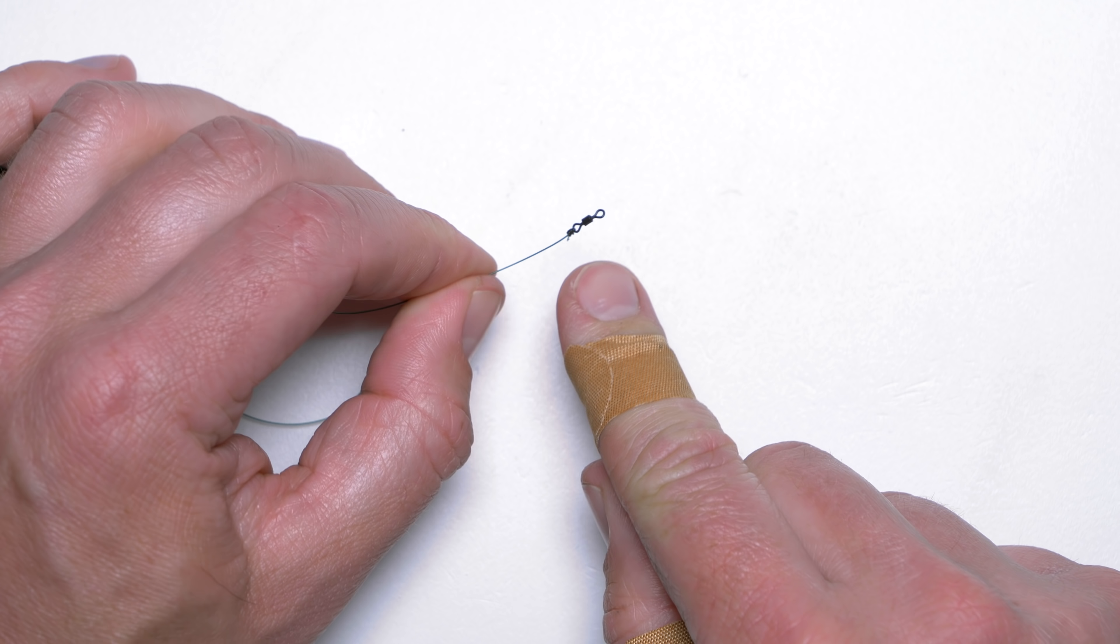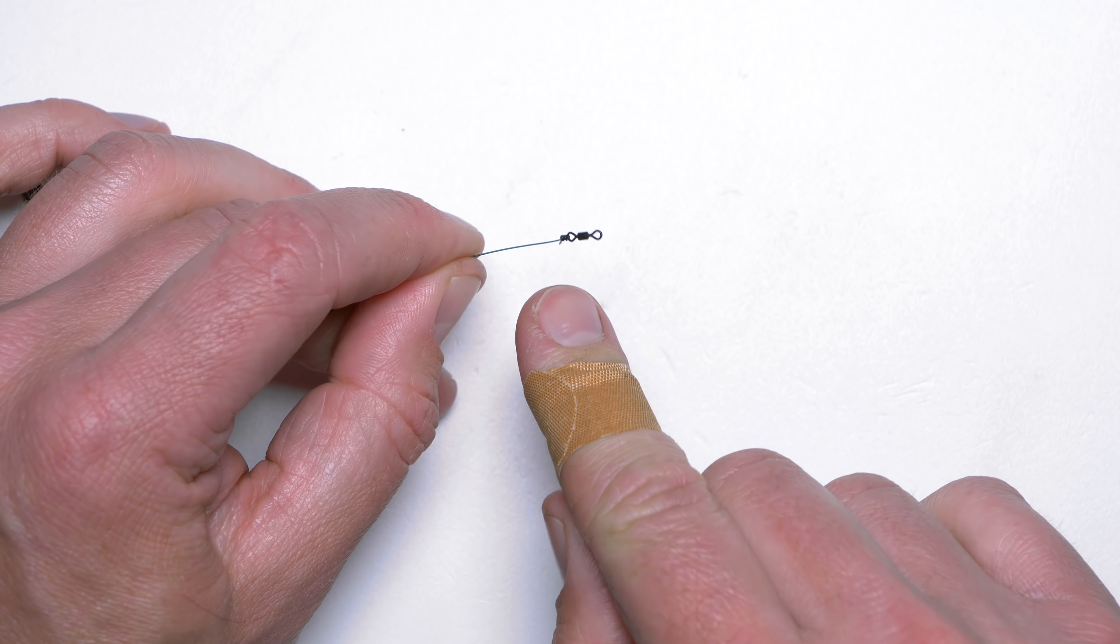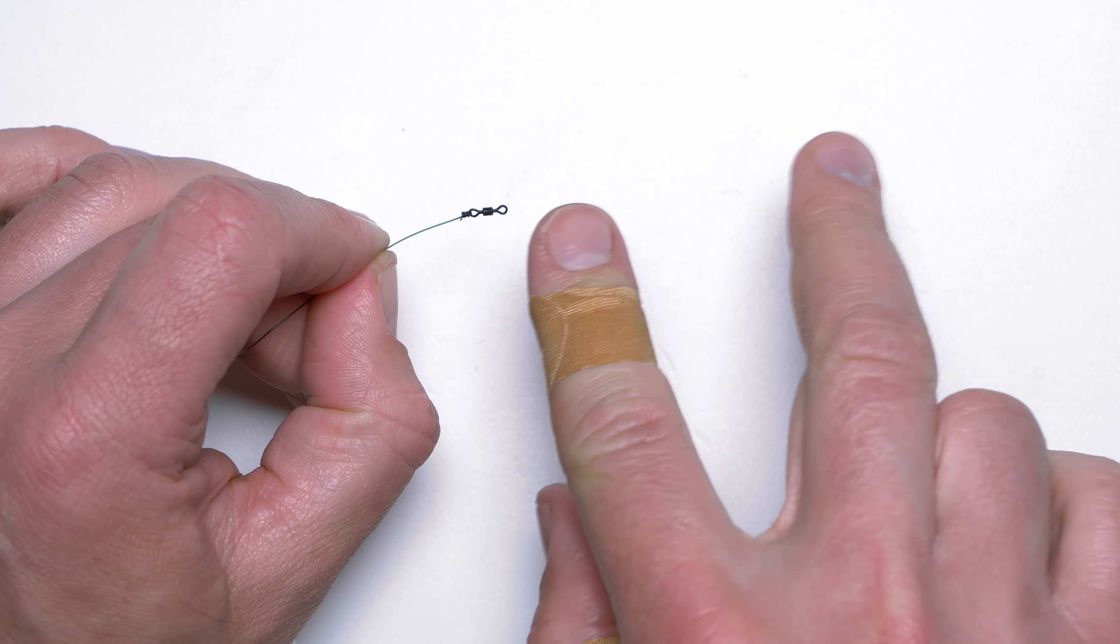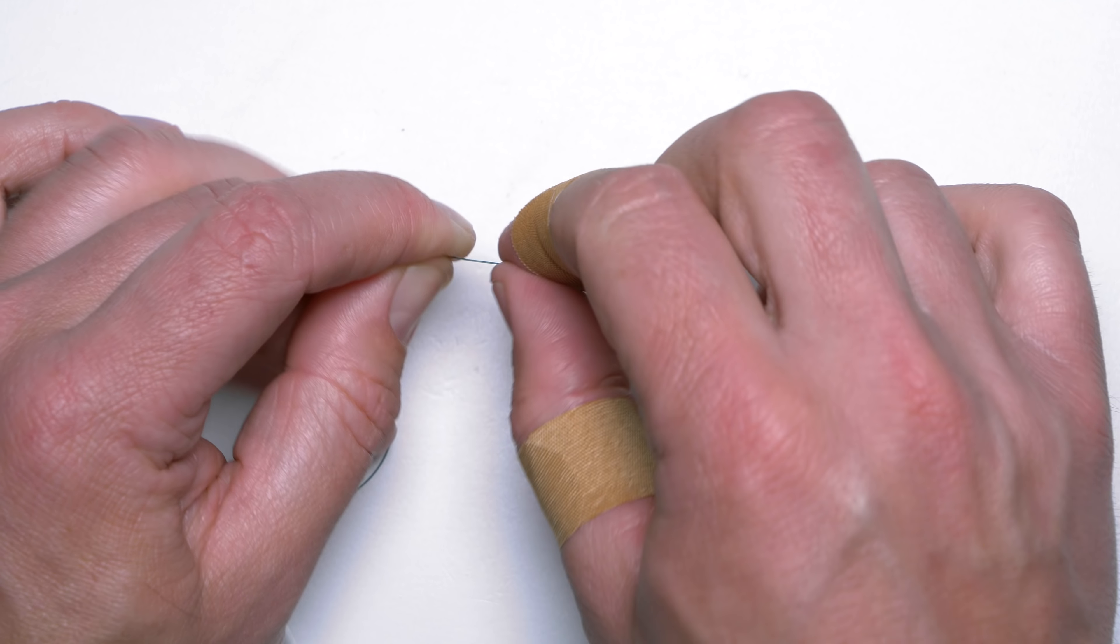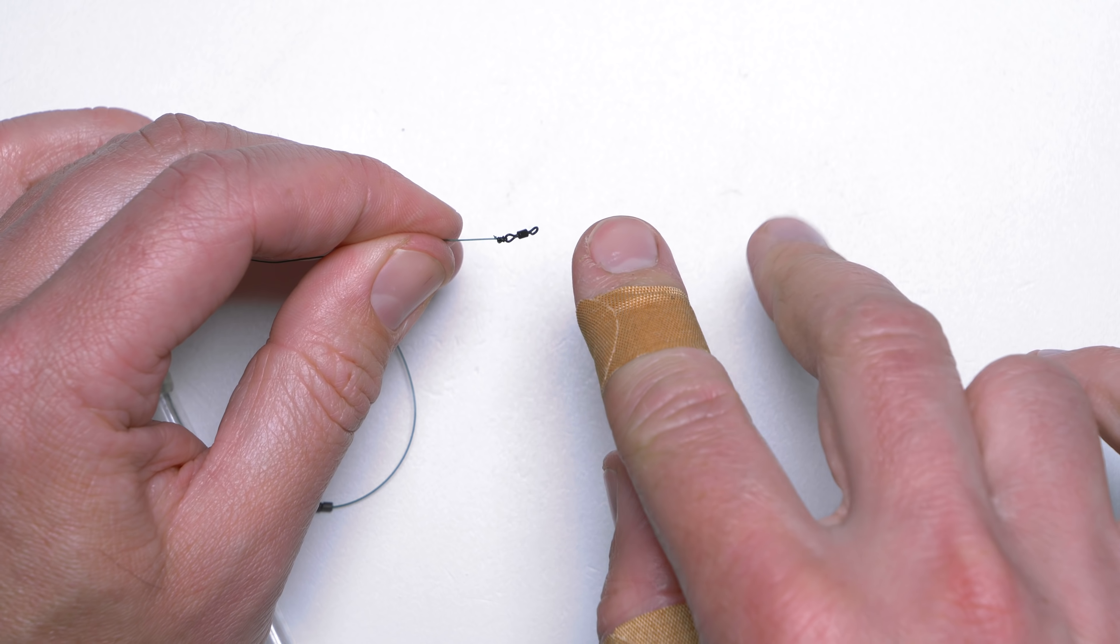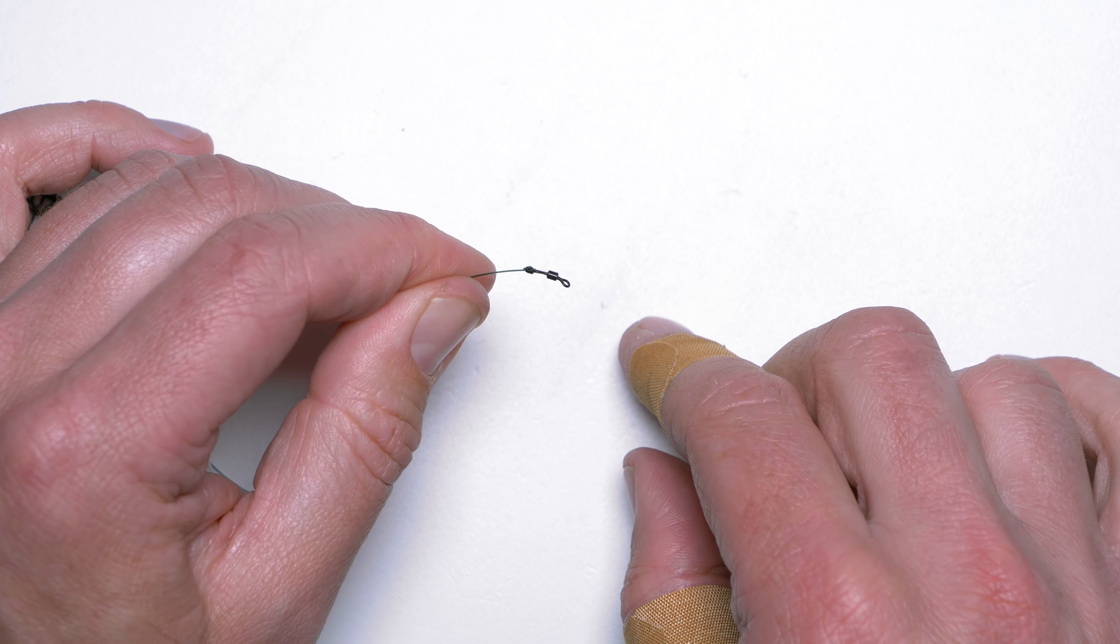And then at the end we have a very small swivel. This swivel will cut out all the line twist. By that I mean hook link line twist. So you will be able to use very fine hook links and hook baits which tend to spin the hook link as well. It's really perfect.